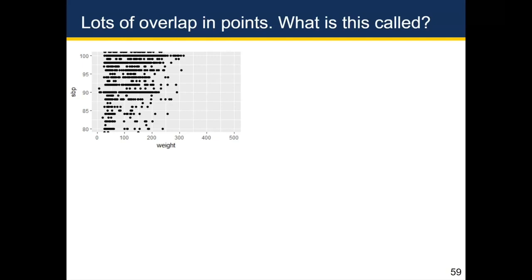So on this plot on the last slide, we notice a lot of overlap in points. And in particular, if you look at the systolic blood pressure of 90 and 100, you almost see what appears to be a straight line because there's so many points that are overlapping. So if I were to ask you, where are the points more dense at systolic blood pressure of 90 or 100? How would you tell? When this phenomenon happens where a lot of points are overlapping, this is called overplotting.